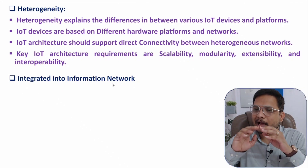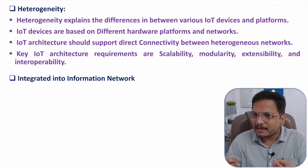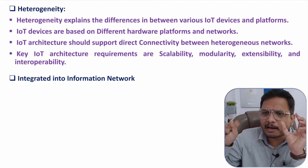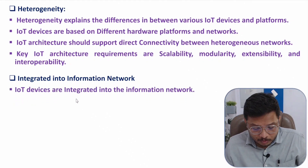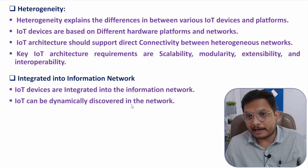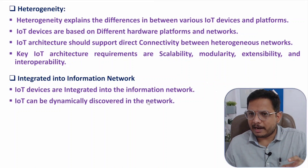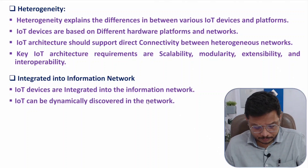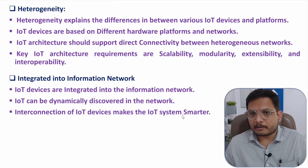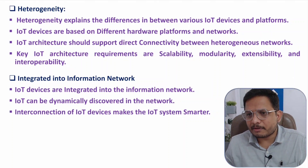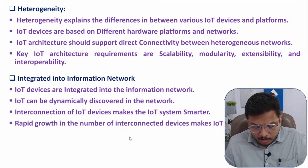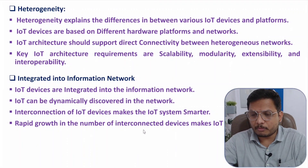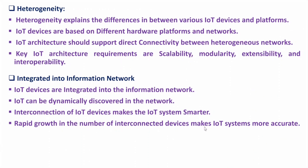The entire IoT system is integrated into an information network. With the internet, all devices — all things — are connected. IoT devices are integrated into an information network where they can be dynamically discovered using routing algorithms. Interconnection of IoT devices makes the IoT system smarter, and with respect to time, many more devices are being added. Rapid growth in the number of interconnected devices makes the IoT system more active and accurate.